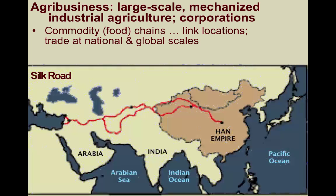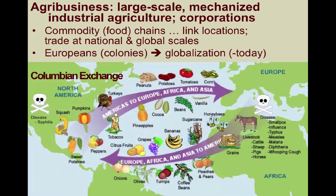While food and commodities have been traded locally and regionally since antiquity, it was the Europeans who first expanded commodity chains to a global scale, beginning with the Columbian Exchange across the Atlantic and then expanding as their colonial empires spread throughout the Americas, Asia, Australia, and Africa.